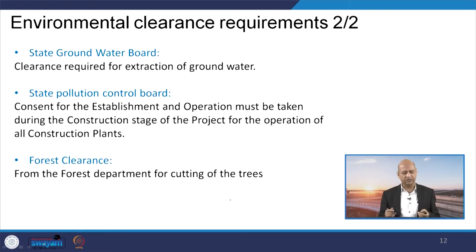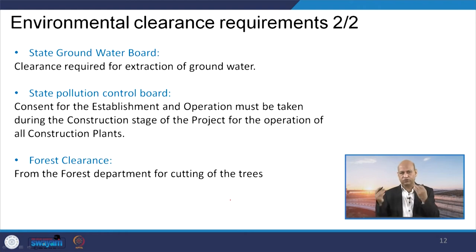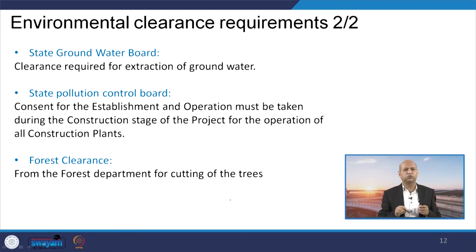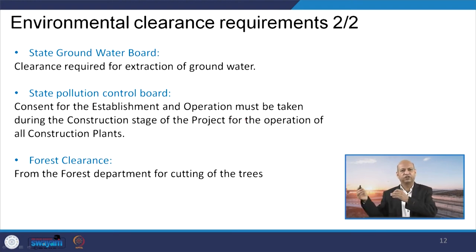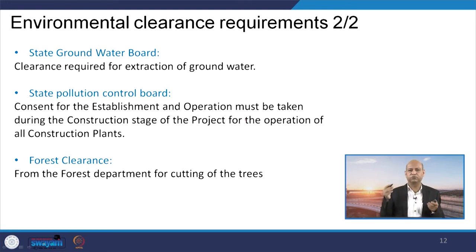Environmental clearances were required from various agencies: the State Groundwater Board for extraction of groundwater during construction activities, the State Pollution Control Board for consent of establishment and operations for various construction activities, and forest clearance since certain trees were marked for removal for the highway project.